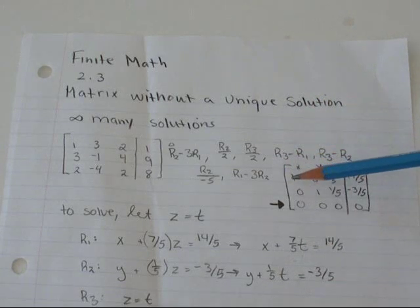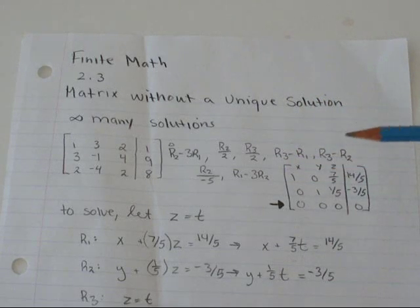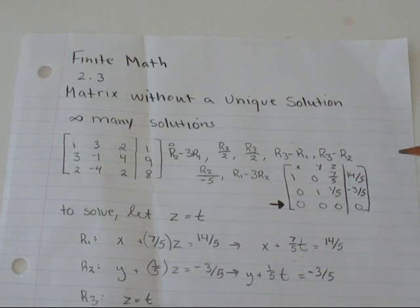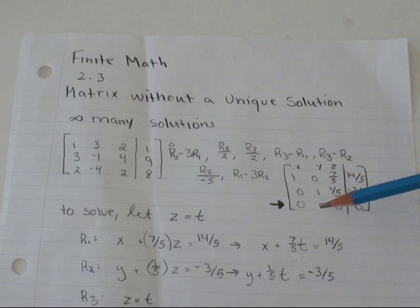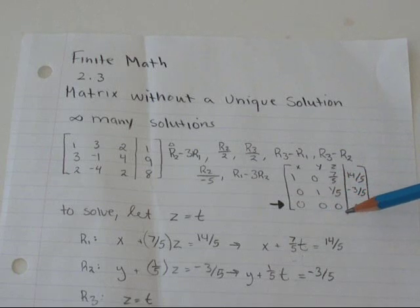I got x plus 0y plus 7 over 5z equals 14 over 5, 0x plus y plus 1 over 5z equals negative 3 over 5. And uh-oh, 0x plus 0y plus 0z equals 0.